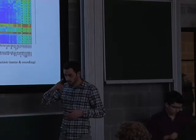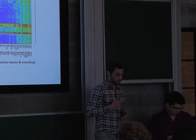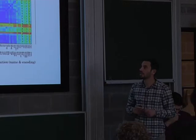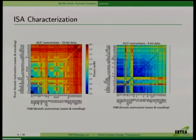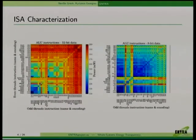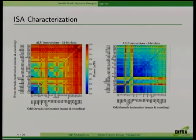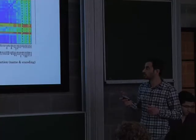By measuring energy, we are able to extract an ISA energy model, which allows us to infer energy costs for each instruction in the ISA. We also take into consideration the inter-instruction effect - having two instructions running at the same time in the pipeline. This model is also multi-threaded, and we did measurements for different sizes of data.